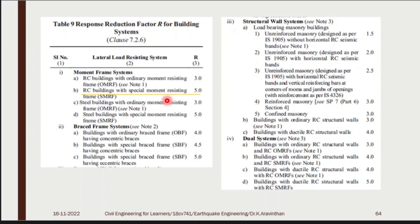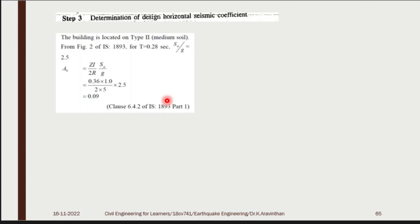What is step 3? Determination of design horizontal seismic coefficient, AH. You will be getting substituting all these values: 0.09. This doesn't have any unit.